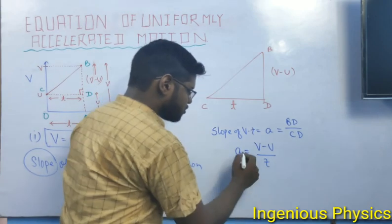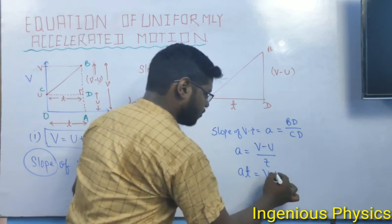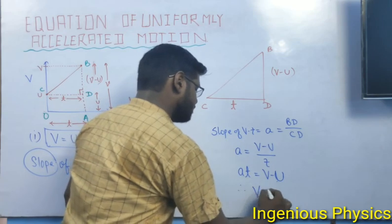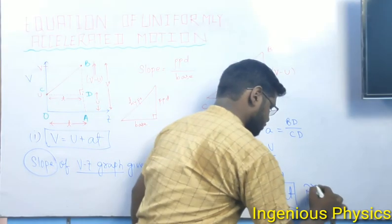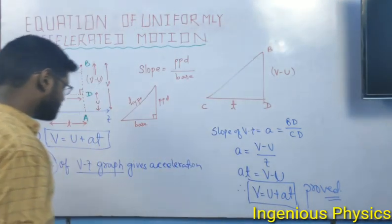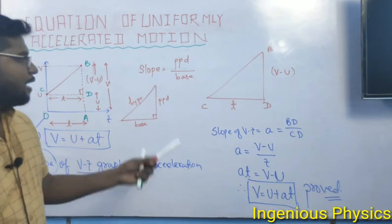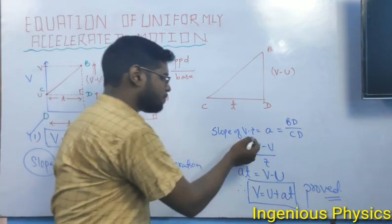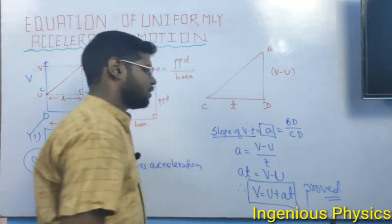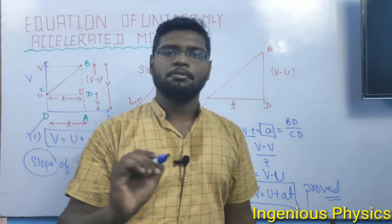Acceleration equals V minus U divided by T. Cross-multiplying gives AT equals V minus U, therefore V equals U plus AT. Our first equation is now proved.